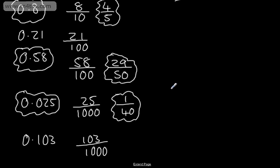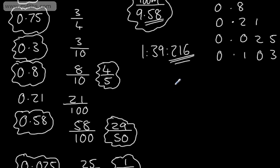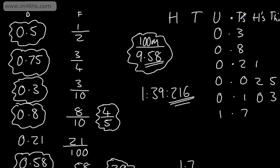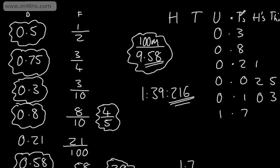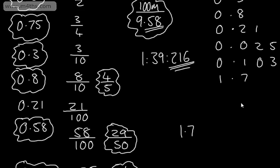So there we go. There are a few numbers. Let's now look at one where we have 1.7. If we think about this now, 1.7 can go in our place value columns. And what we've got here is one unit and seven tenths.